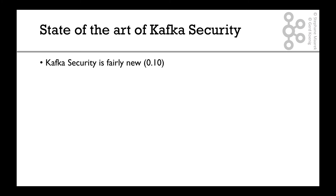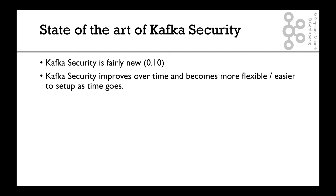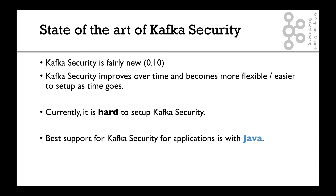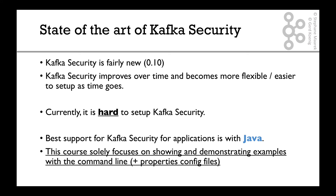Where is security today? Kafka security is fairly new — it is available from version 0.10, and at the time of this recording there is version 1.0, with 1.1 coming soon. Kafka security will improve over time and become more flexible and easier to set up, but currently it is hard to set up, hence this course. The best support for Kafka security right now is Java, so in this course we will solely focus on demonstrating examples using the Java and Kafka command line and properties config files, which are fully Java compatible. We are super excited to teach it to you entirely and will see you in the next lectures.